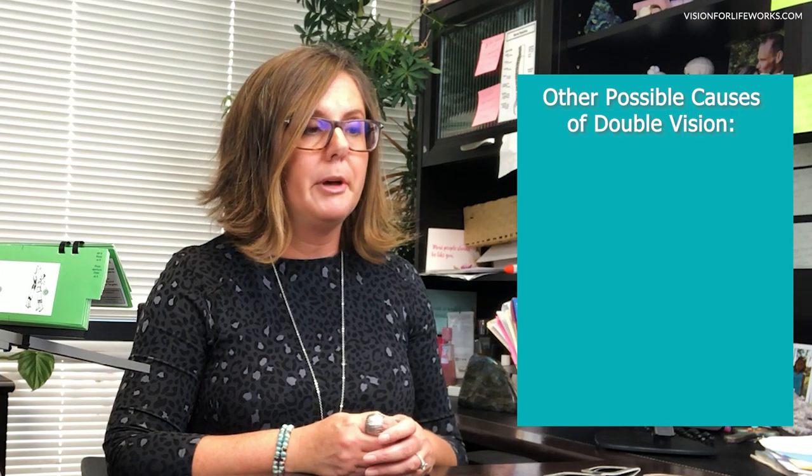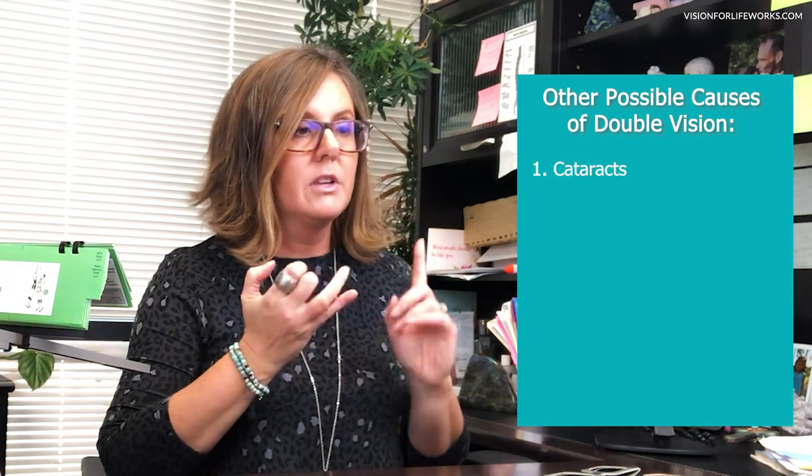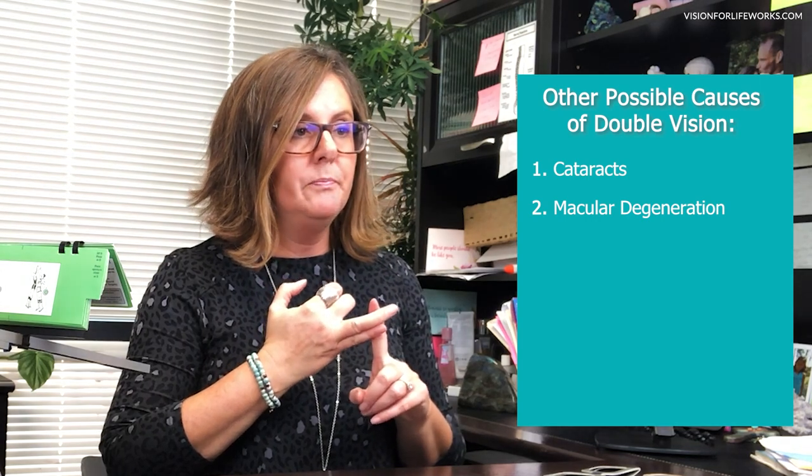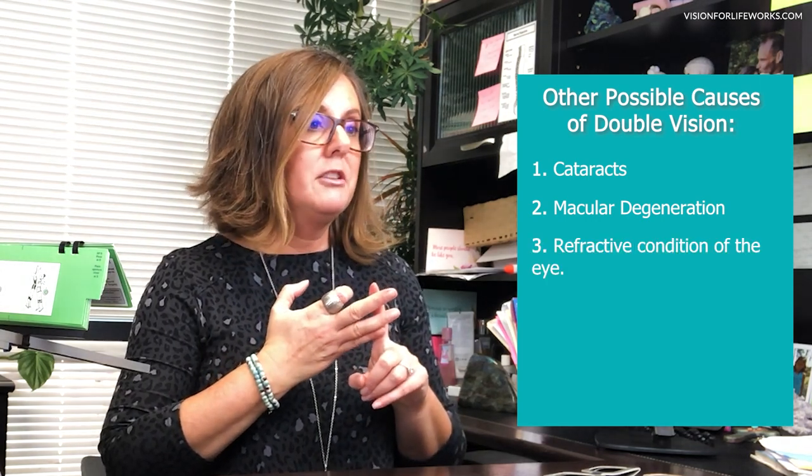There are also other visual possible causes of double vision. One could be cataracts, another could be macular degeneration, and another would be the refractive condition of the eye — meaning when a person is farsighted or has hyperopia, nearsighted or has myopia, or has astigmatism. If you have a difference in the refractive condition between the two eyes, it's possible to get double vision associated with that.